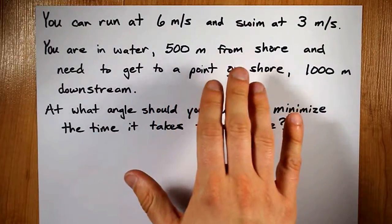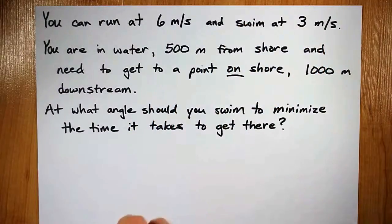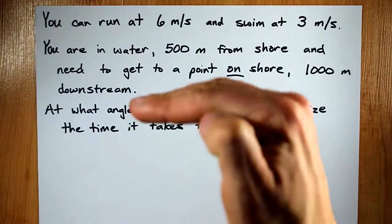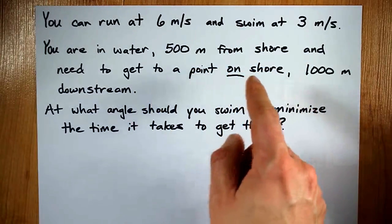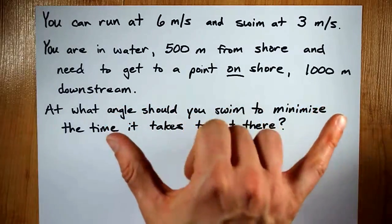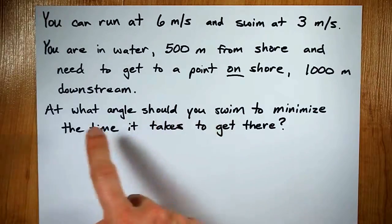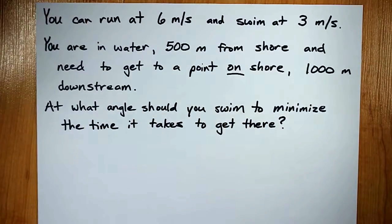Another classic optimization problem. You can run at 6 meters per second and swim at 3. We're going to start you in the water 500 meters away from shore, and you need to get to a point on shore, but that point is a kilometer downstream. Where should you swim to or what angle should you swim at to minimize the time it takes to get there?